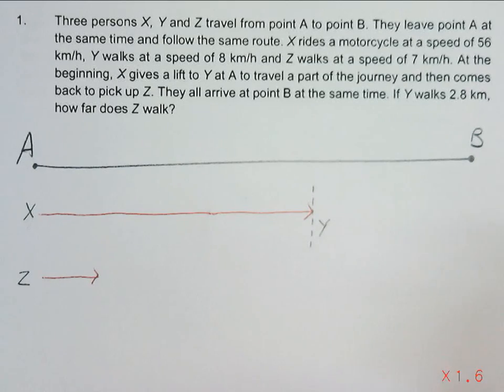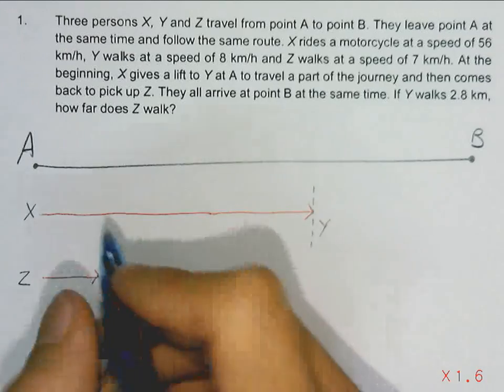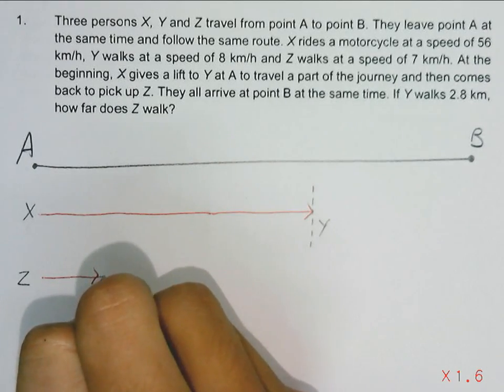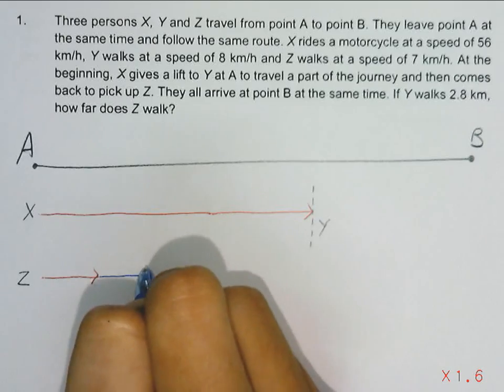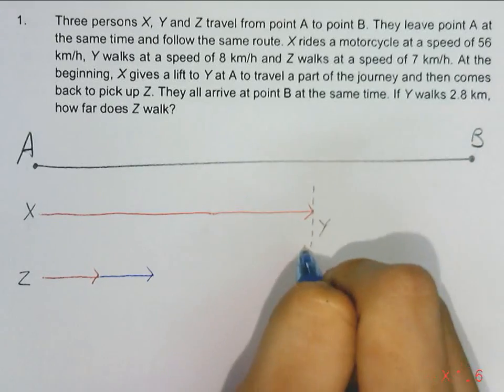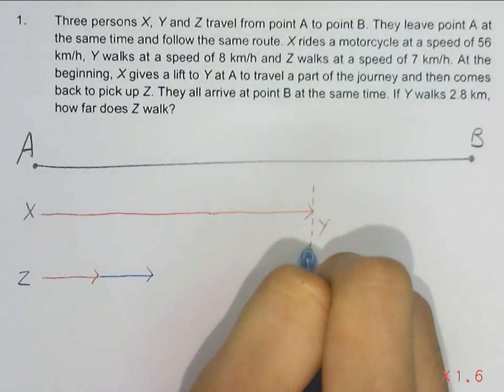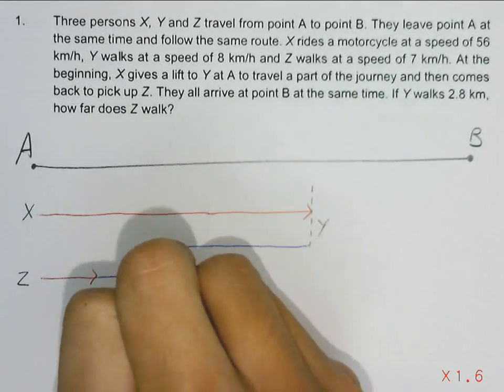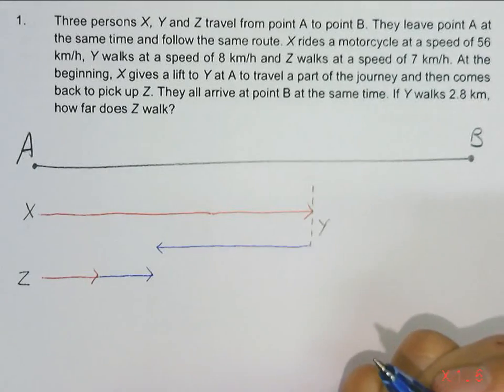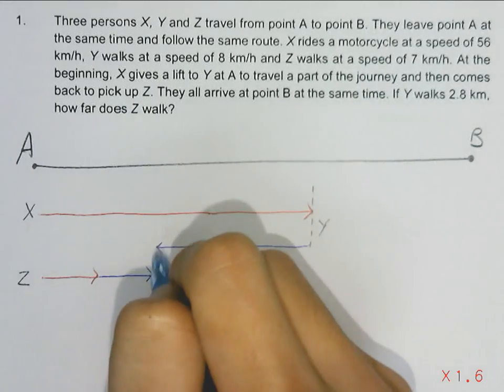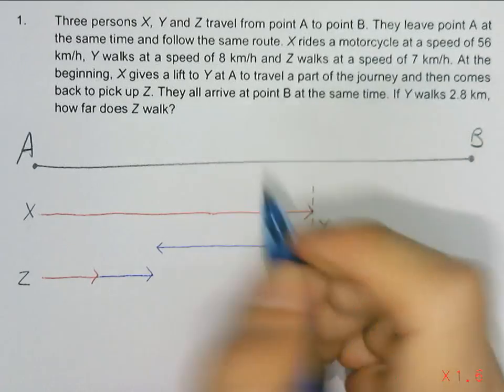So the second time frame will be Z continues to walk, and X will move back to meet Z at this point and to pick him up.